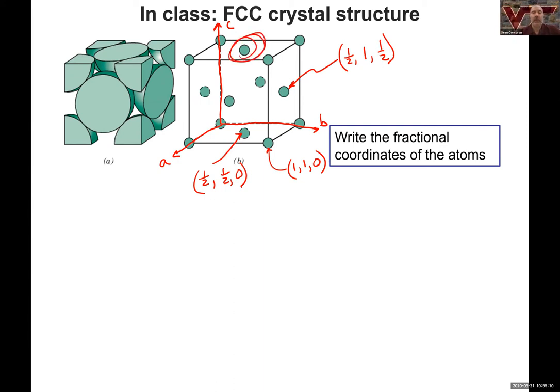All right, so go ahead and think about this one up here. Go ahead and write down what you think the coordinates for that will be. I'll give you just a few seconds to do that. So hopefully you saw that it was one-half out in the X direction, one-half over in the Y direction, and one in the Z direction, C direction. So one-half, one-half, one is a fractional coordinate.